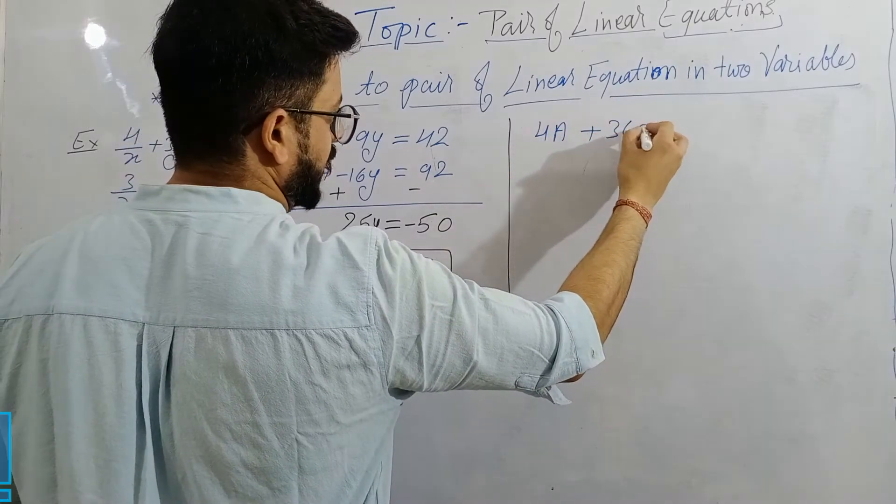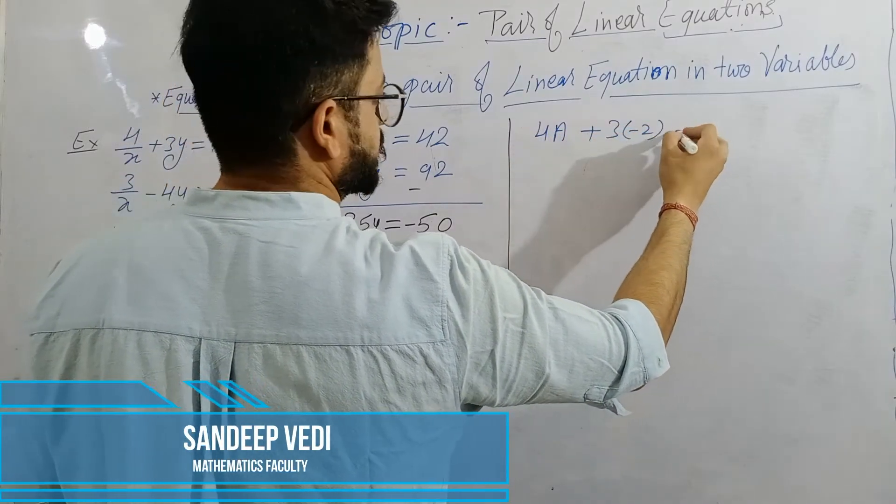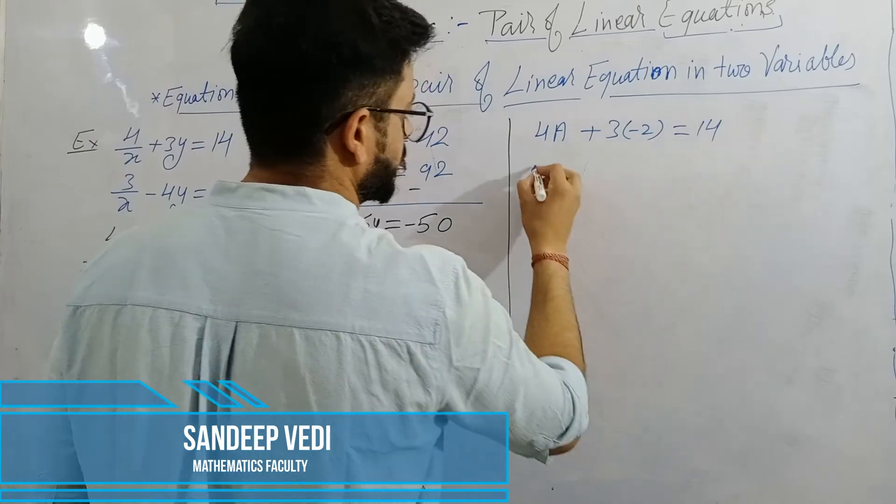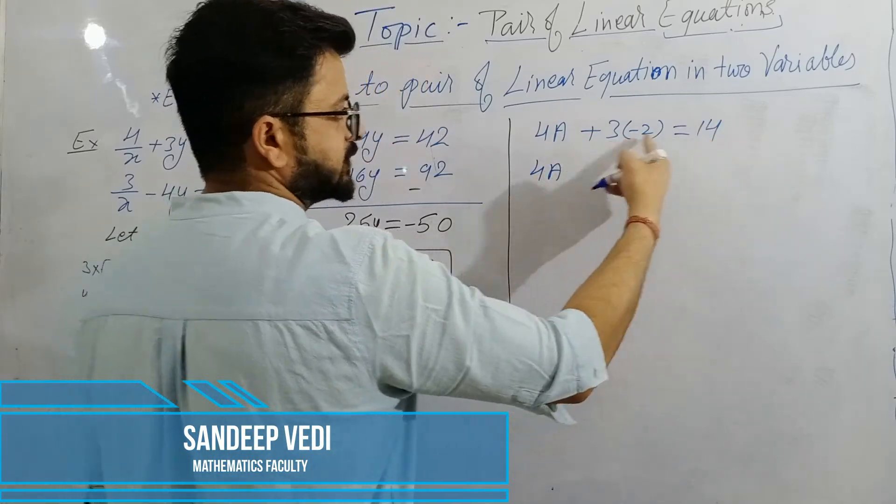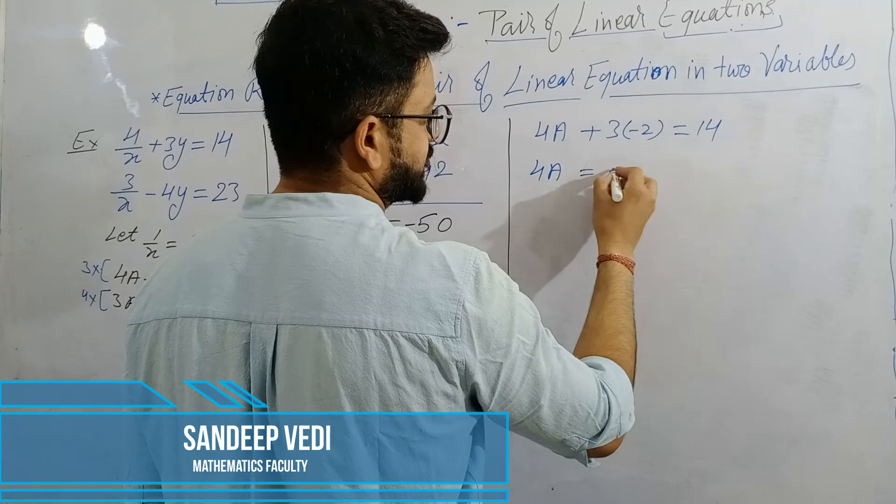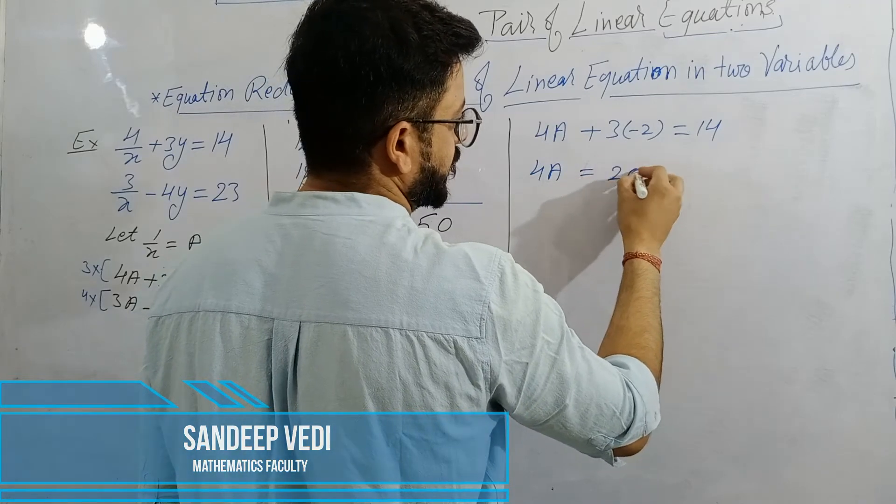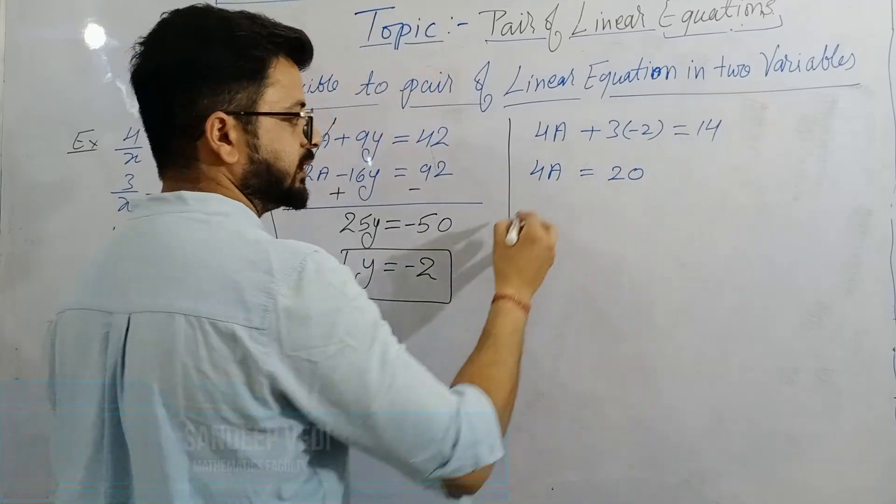Plus 3Y, Y value is minus 2, is equal to 14. So 4A, this is minus 6, minus 6 will go that side then it will be 14 plus 6, 20. A value came 5.